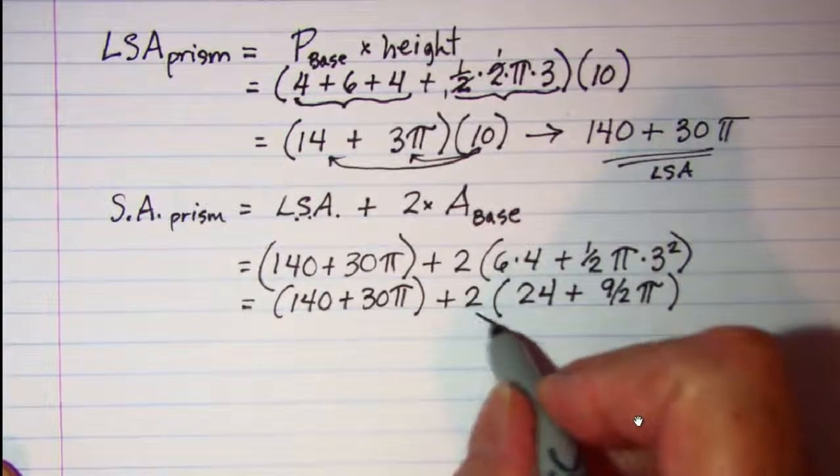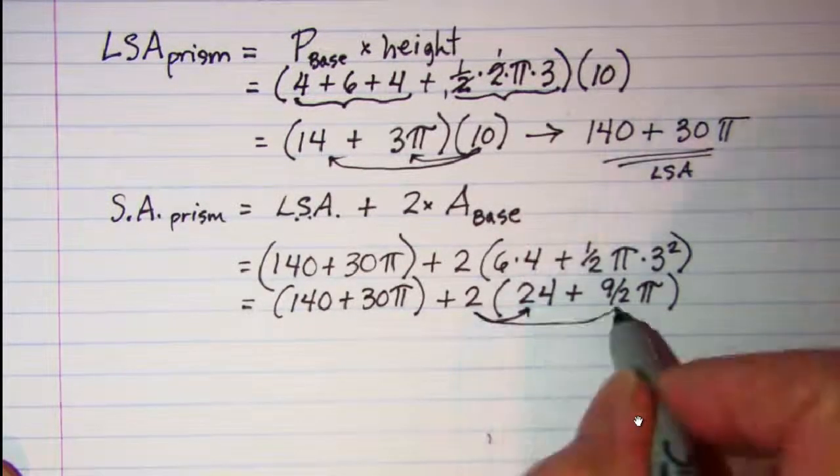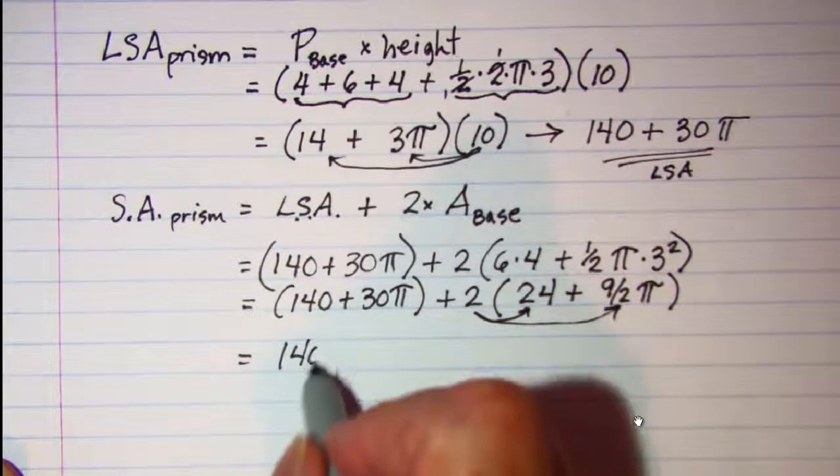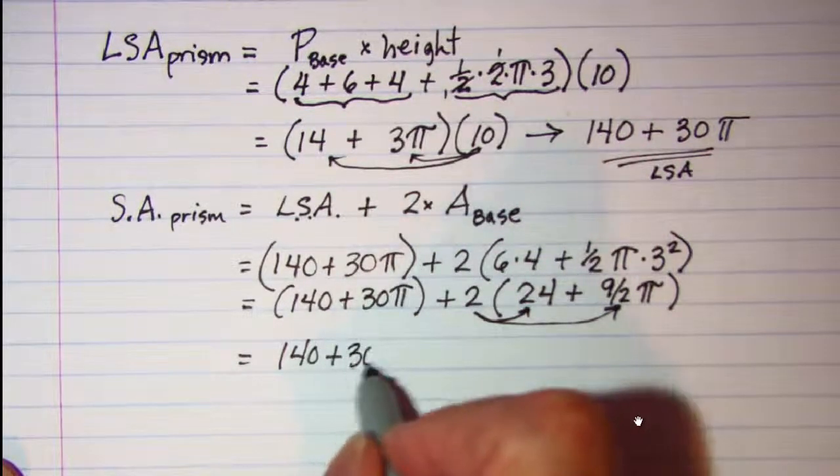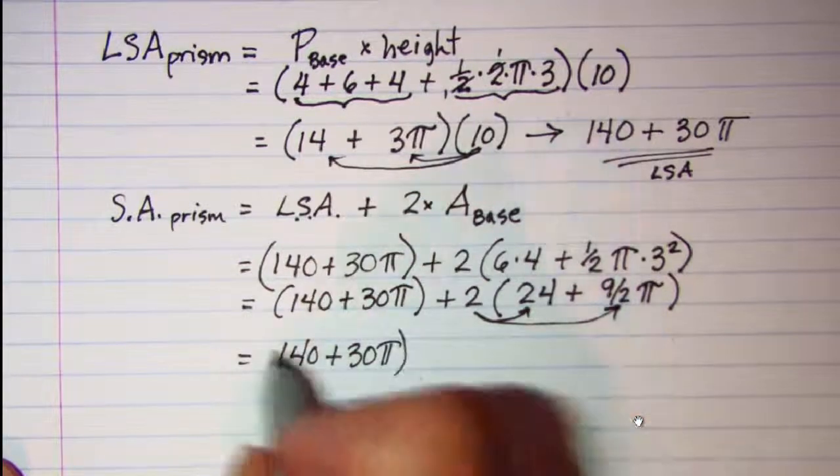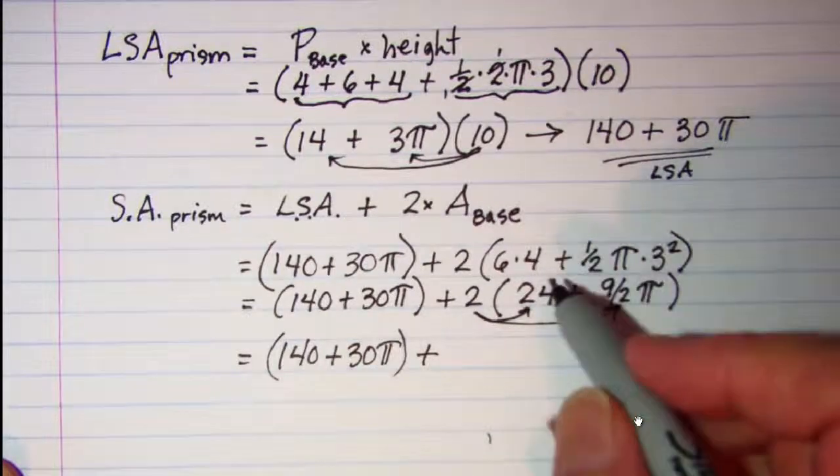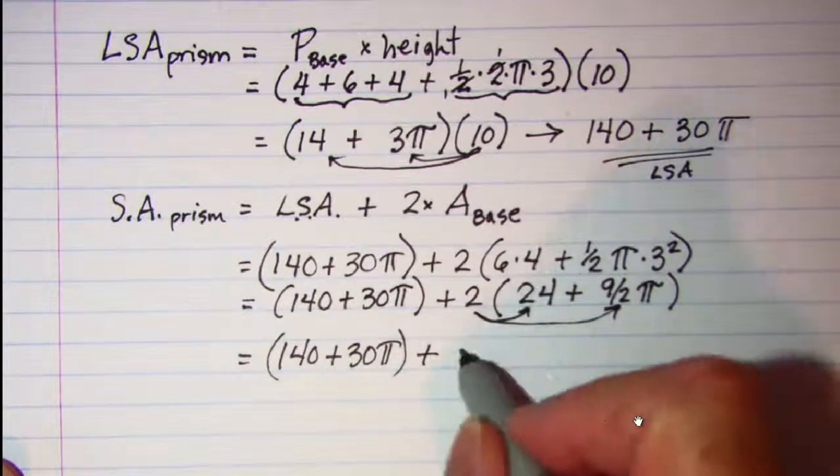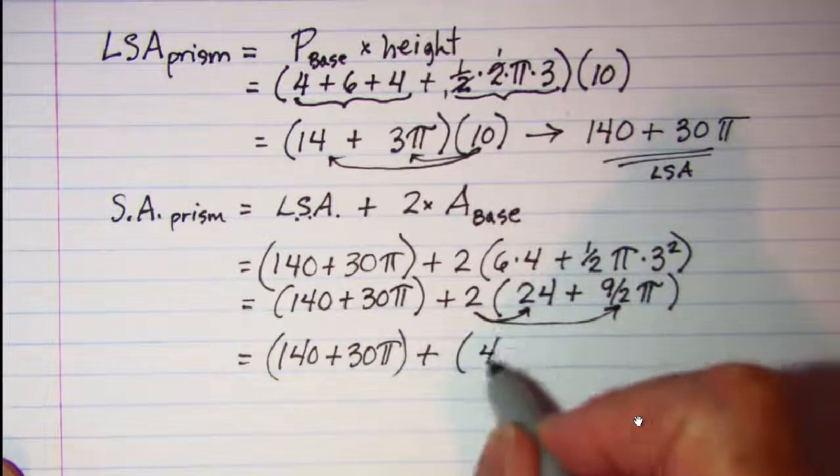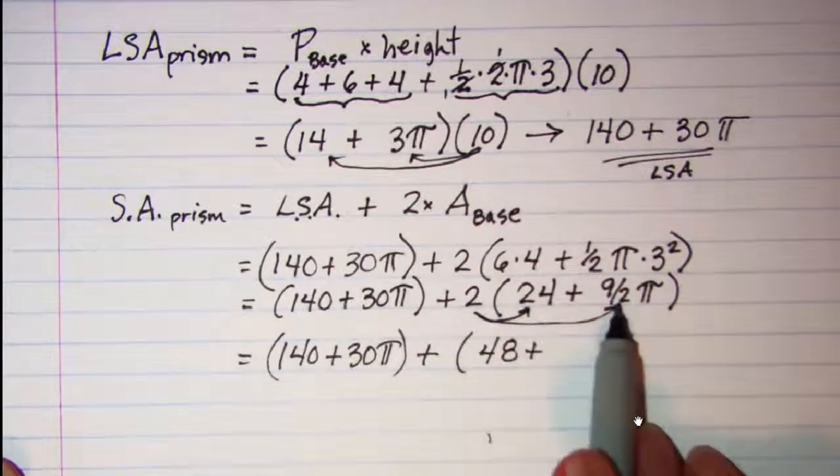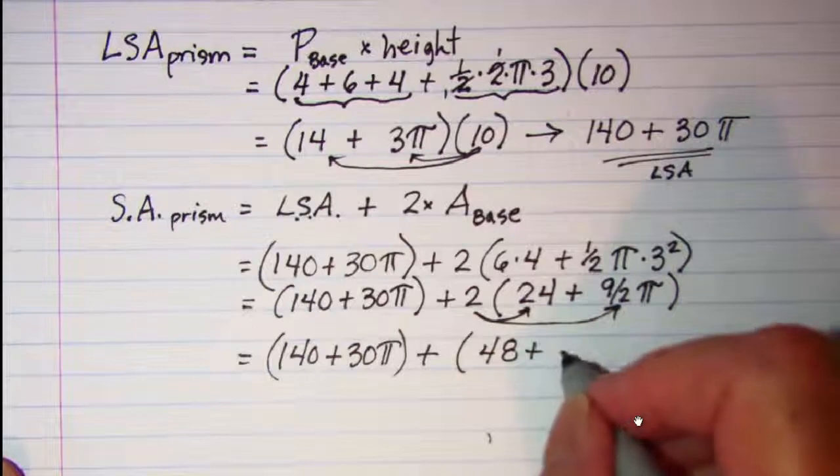Let's distribute this 2 through the binomial. Now I have 140 + 30π + and then 2 times 24 is 48 plus and then 2 times 9/2 π is 9π.